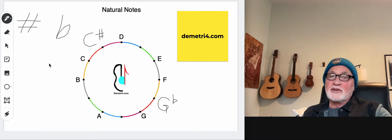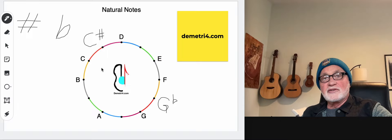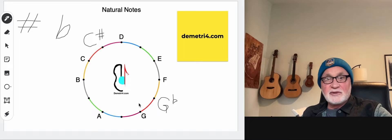Sharp sign. That's the one that looks like the hashtag. The sharp sign indicates that the altered note's a half step higher. So remember higher on the circle is clockwise. C sharp, D sharp, F sharp, G sharp, A sharp.